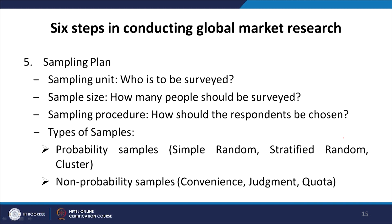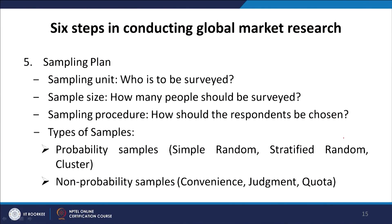The fifth component is the sampling plan, which consists of three questions: the sampling unit — who is to be surveyed; the sampling size — how many people should be surveyed; and the sampling procedure — how should respondents be chosen. Probability samples include simple random, stratified random and cluster samples. Non-probability samples are convenience, judgment and quota.